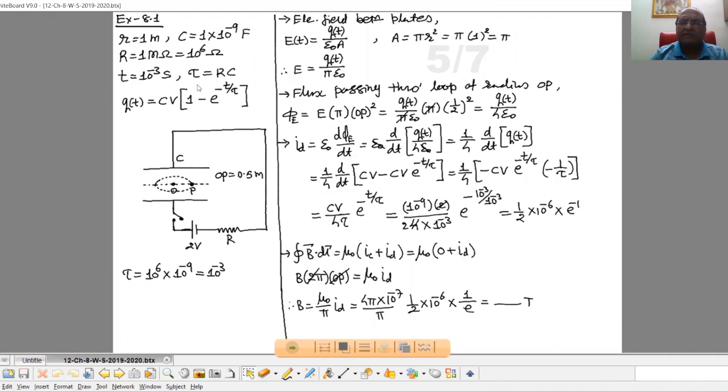Now time constant that is RC. Now Q at any time t is given as equal to CV into 1 minus e raise to minus t upon tau. Let's first calculate tau. So tau is R into C, 10 raise to 6 into 10 raise to minus 9, that is 10 raise to minus 3.